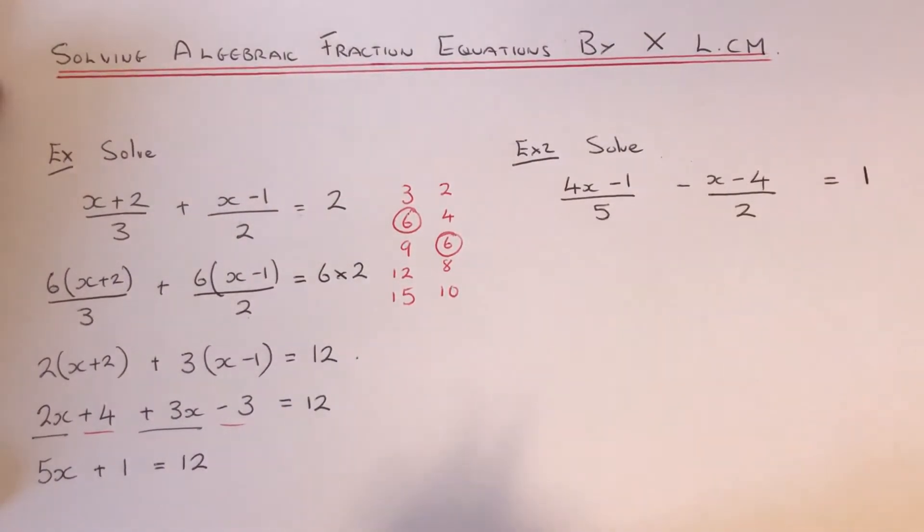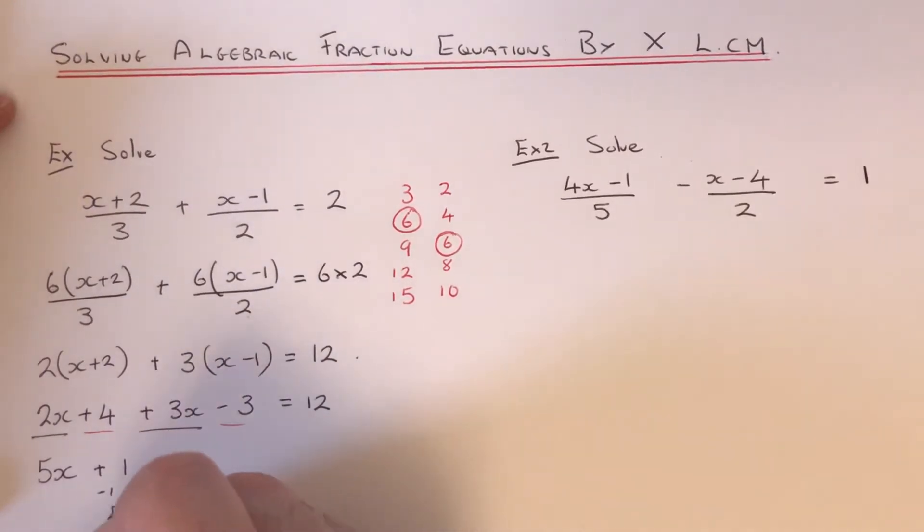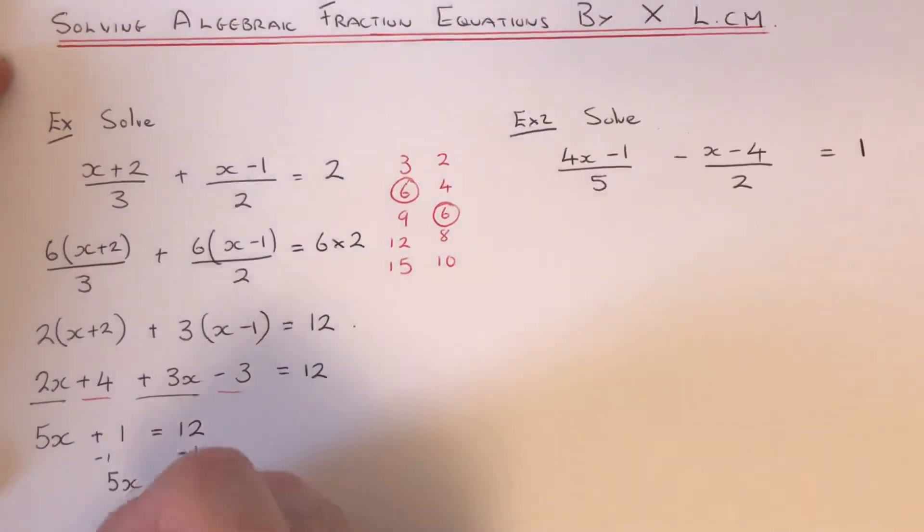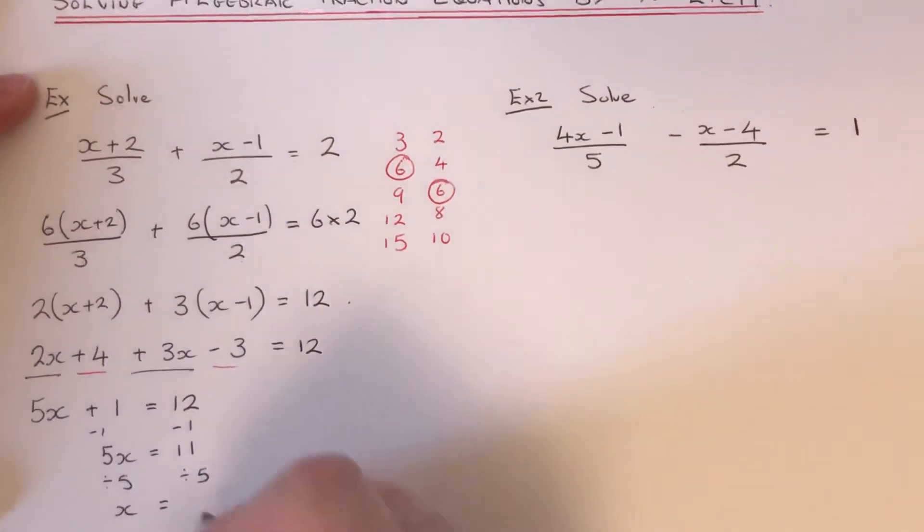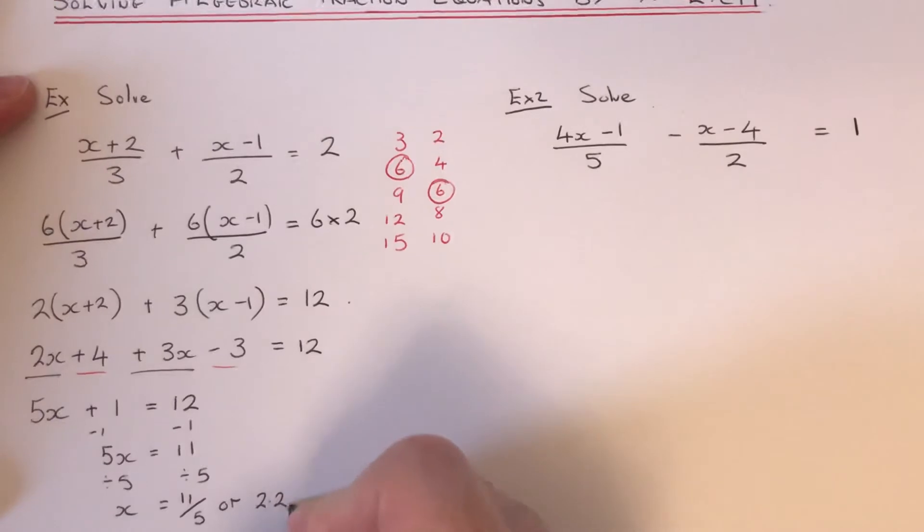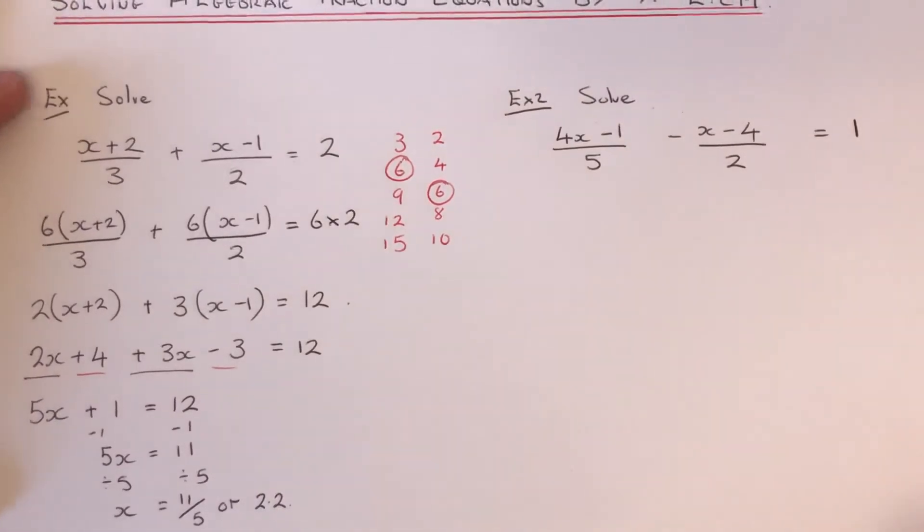We just ended up with a simple equation now. So we just need to do our inverses. The opposite to plus 1 is minus 1. So that will give us 5x equals 11. And then we've just got to divide by 5. So that will be x equals 11 over 5, or we can write it as a decimal as 2.2. Either answer is fine.